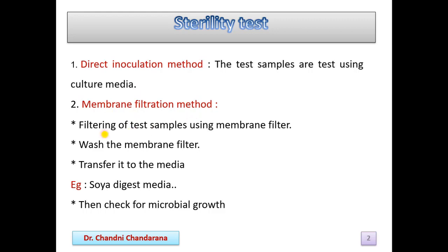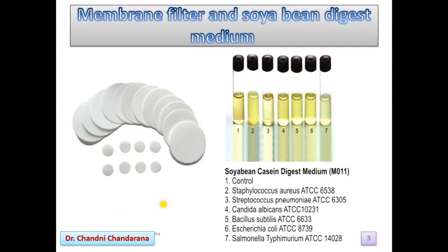For the membrane filtration method, we have to filter the test sample using a membrane filter, then wash the membrane filter and transfer it to the media — for example, soya bean casein digest medium — and then check for microbial growth. Here we can see the membrane filters and the soya bean casein digest medium.